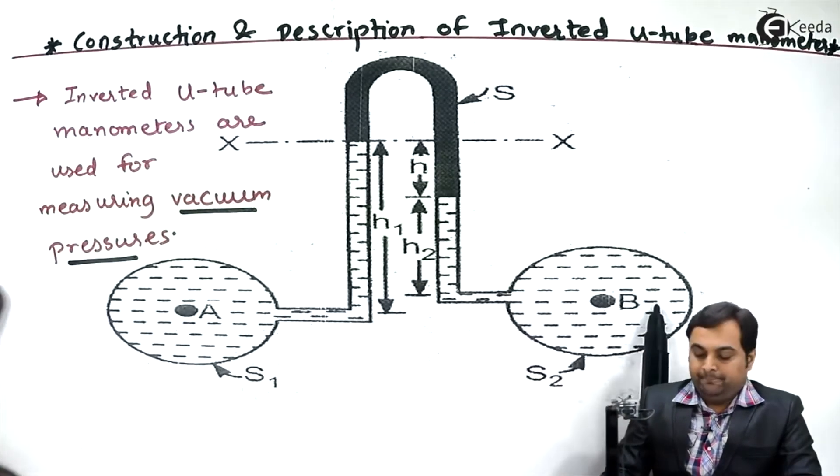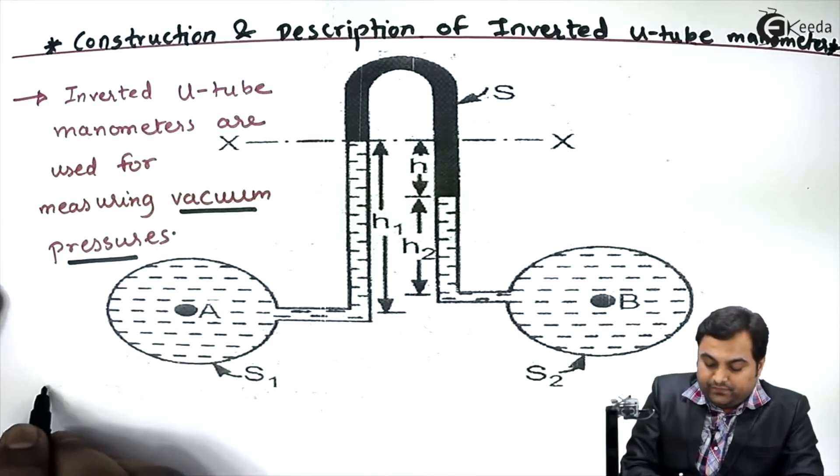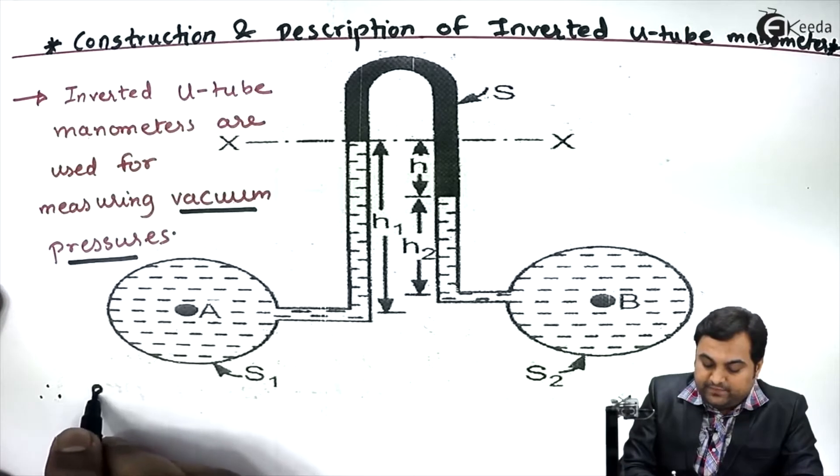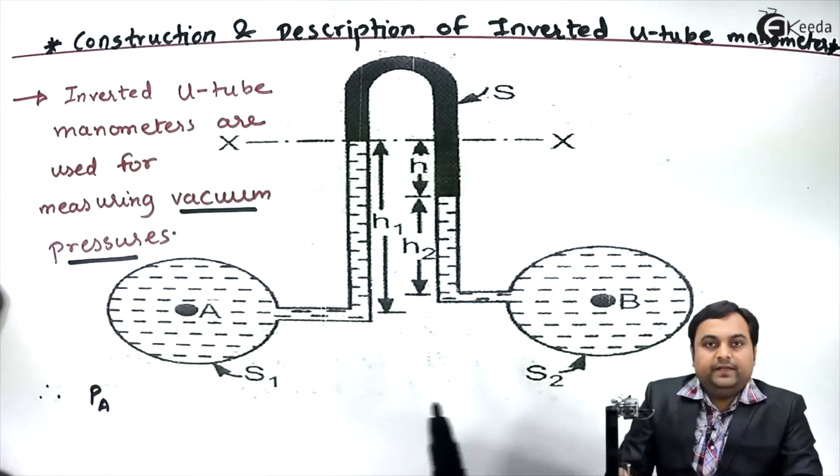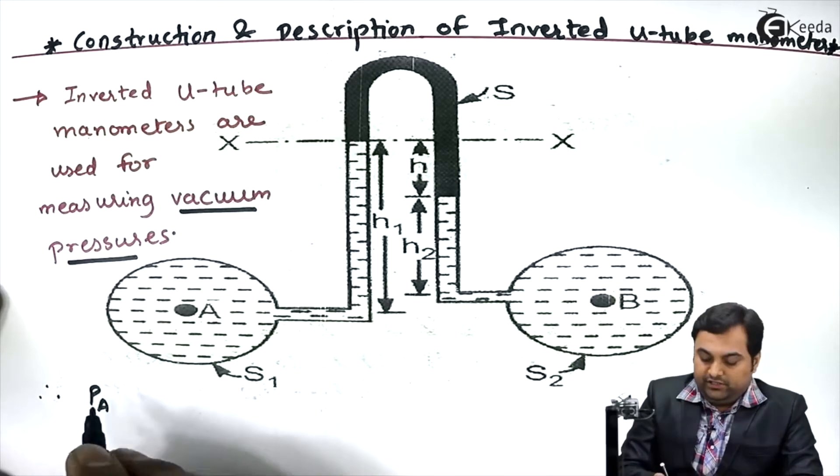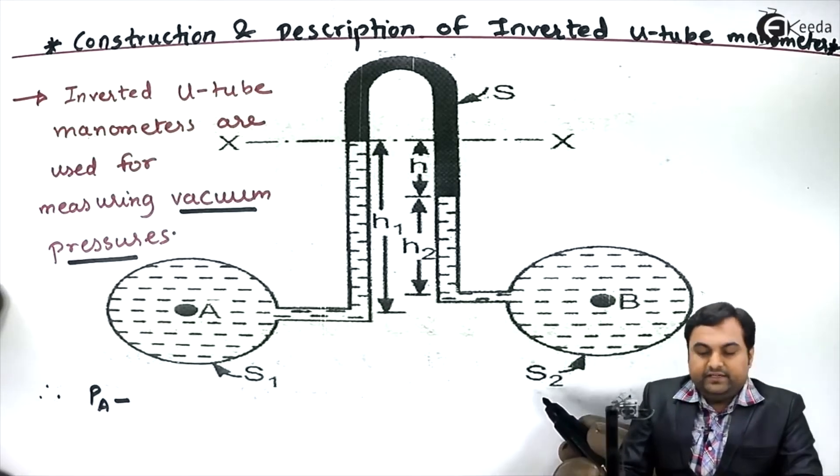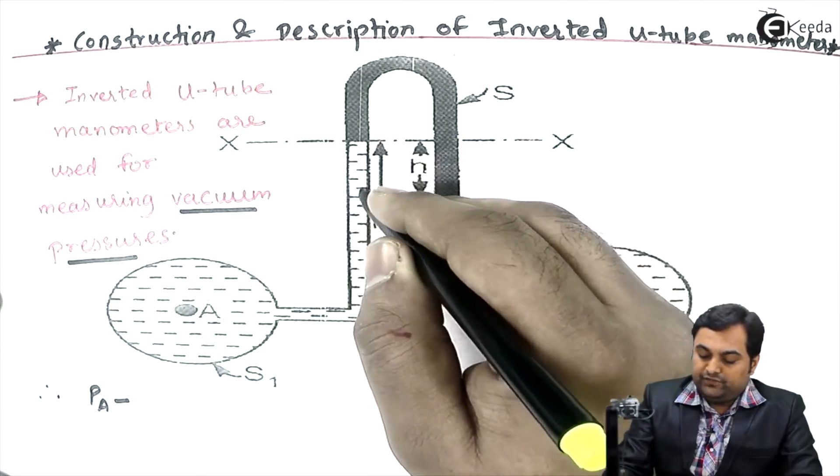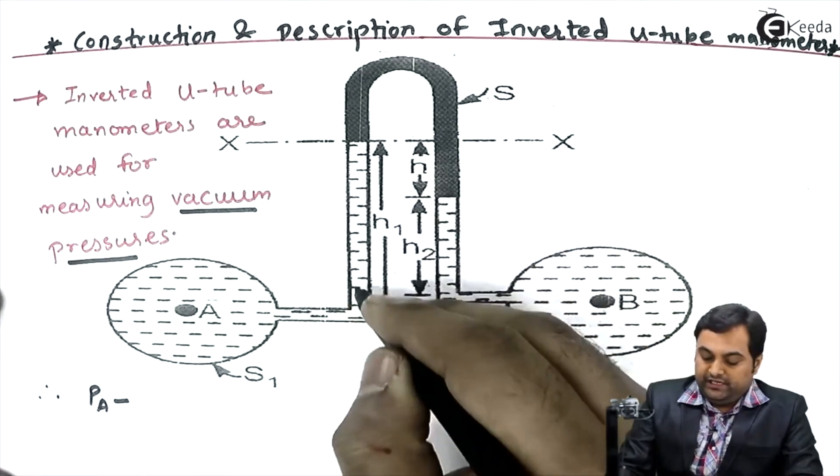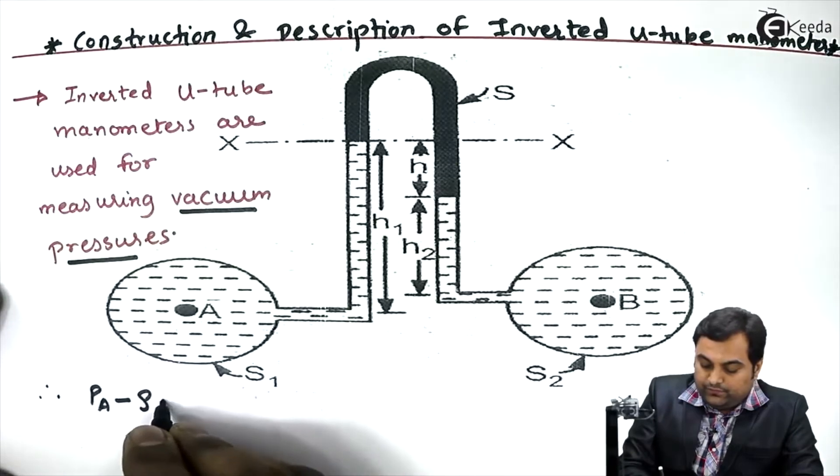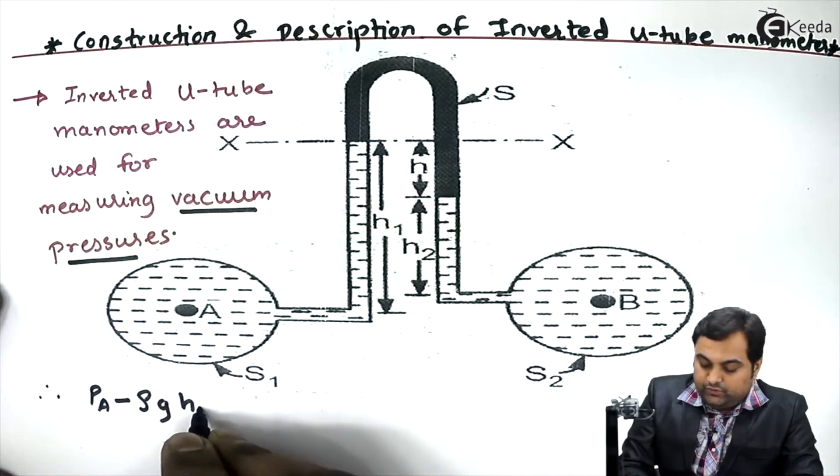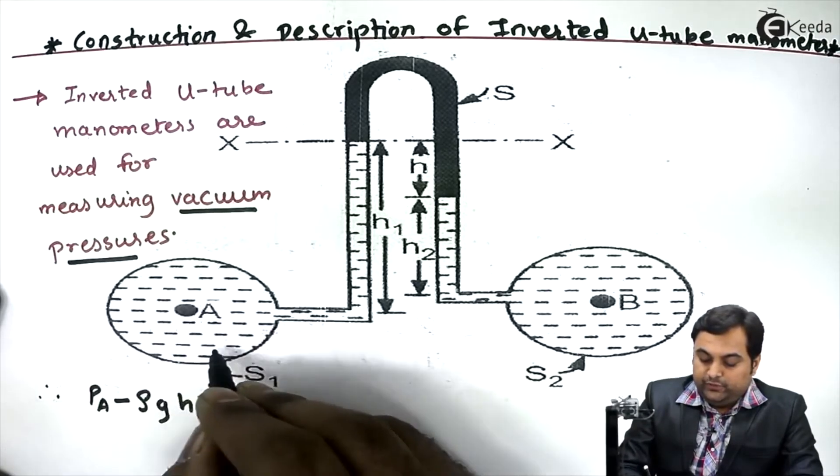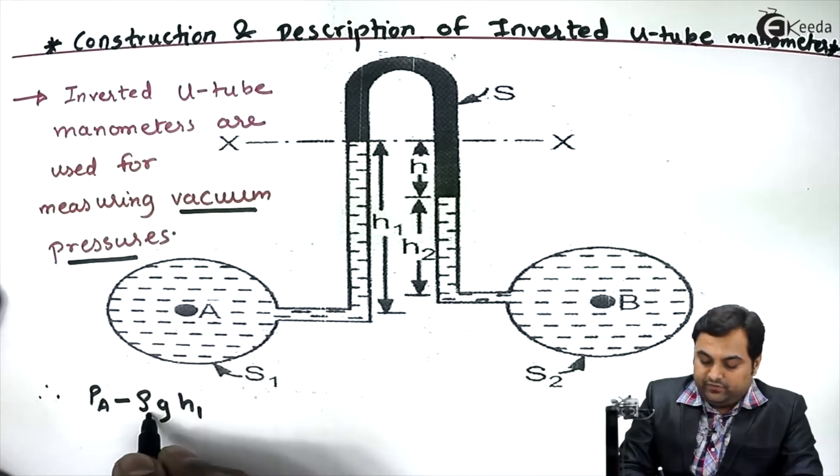Therefore, this is pressure in pipeline A. Instead of adding here, I would be subtracting, that is minus pressure because of left limb, because of this column h1. So that will be ρA·g·h1. This density would be of the fluid which is there inside this pipeline, so I'll write here A.